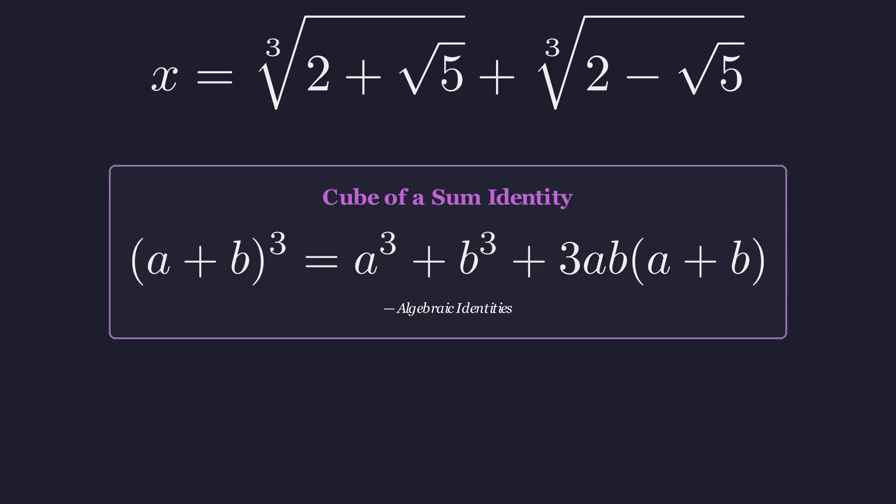can be written as a cubed plus b cubed plus 3 times a times b times the original sum. This might look a bit different from the expanded form you learned in school, but this factored version is going to be much more powerful for what we're doing here.